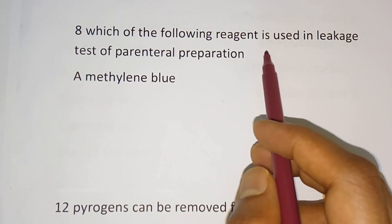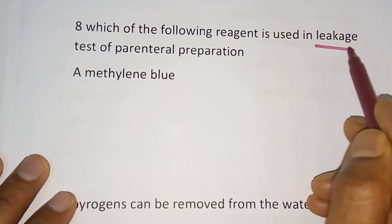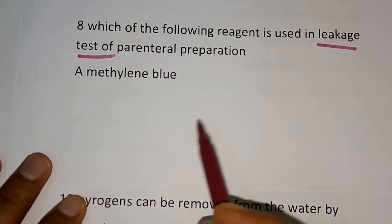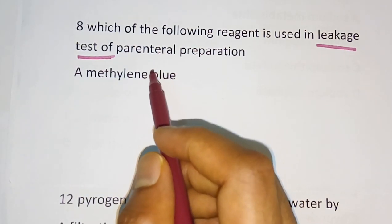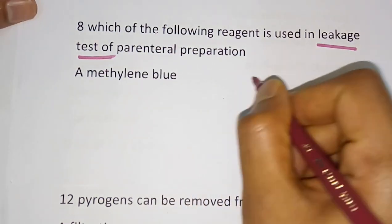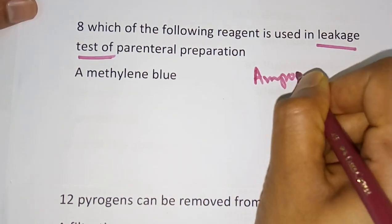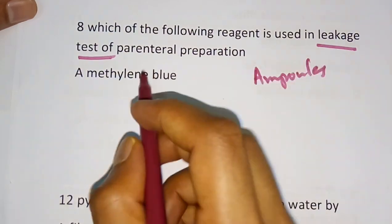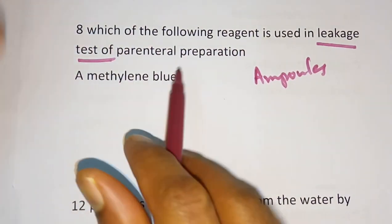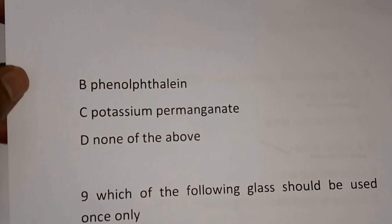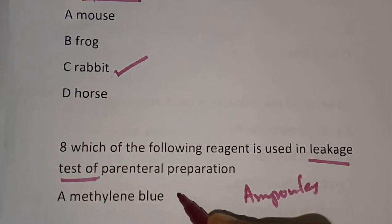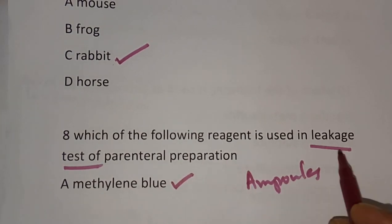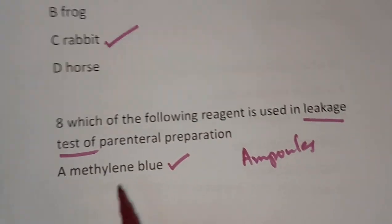Question 8: Which reagent is used in the leakage test of parenteral preparation? The leakage test checks whether sealing is done properly, especially in the case of ampoules. Options: methylene blue, phenolphthalein, potassium permanganate, none of the above. The correct answer is methylene blue, option A.